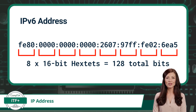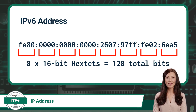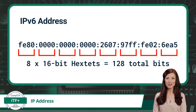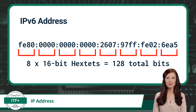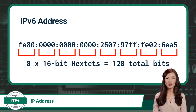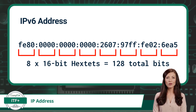IPv6 addresses are considerably longer than IPv4 addresses, at 128 binary digits long. IPv6 addresses also use a different addressing scheme: they include eight groups of four hexadecimal digits separated by colons. Each group of four hexadecimal digits can also be called a hex tet.